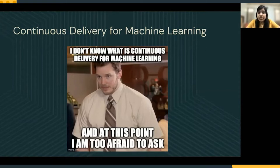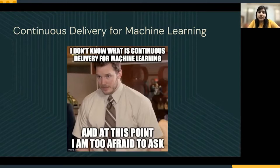To reduce technical debt in machine learning systems and add more automation, here comes continuous delivery. It is very essential, and if you don't have it from scratch — if you're ignoring it when your project has started — you may end up in a problematic situation. Adding it at a later stage of the project increases the job by a huge amount.